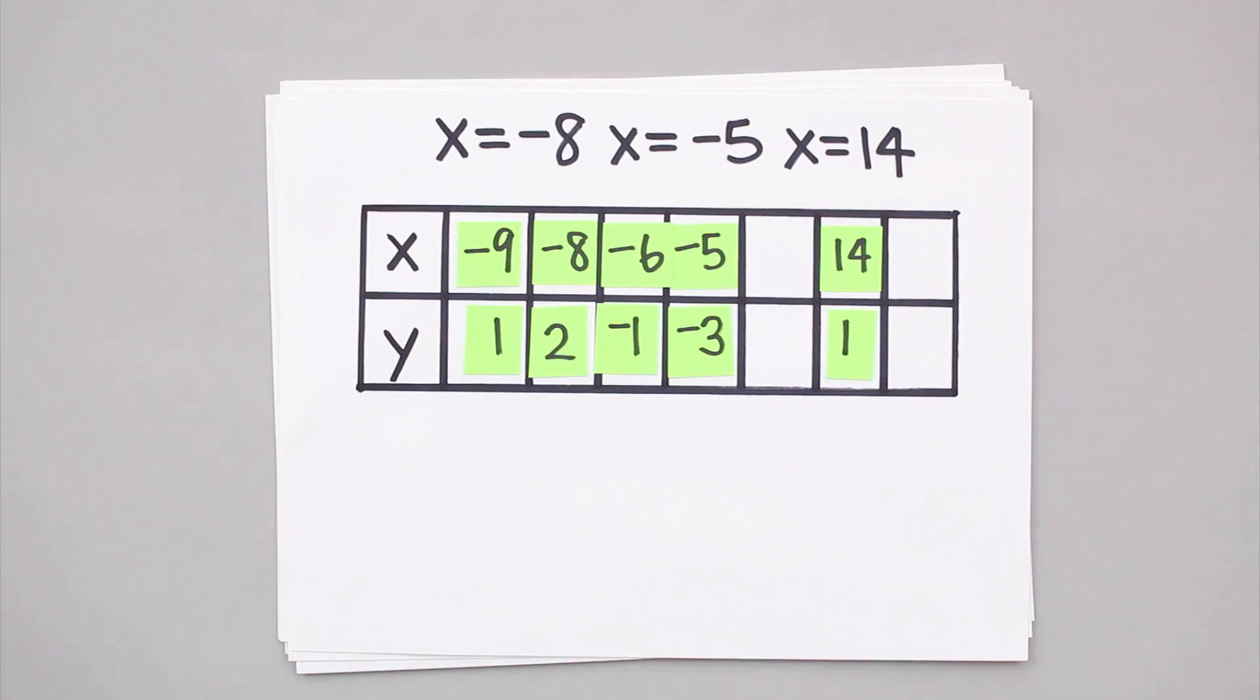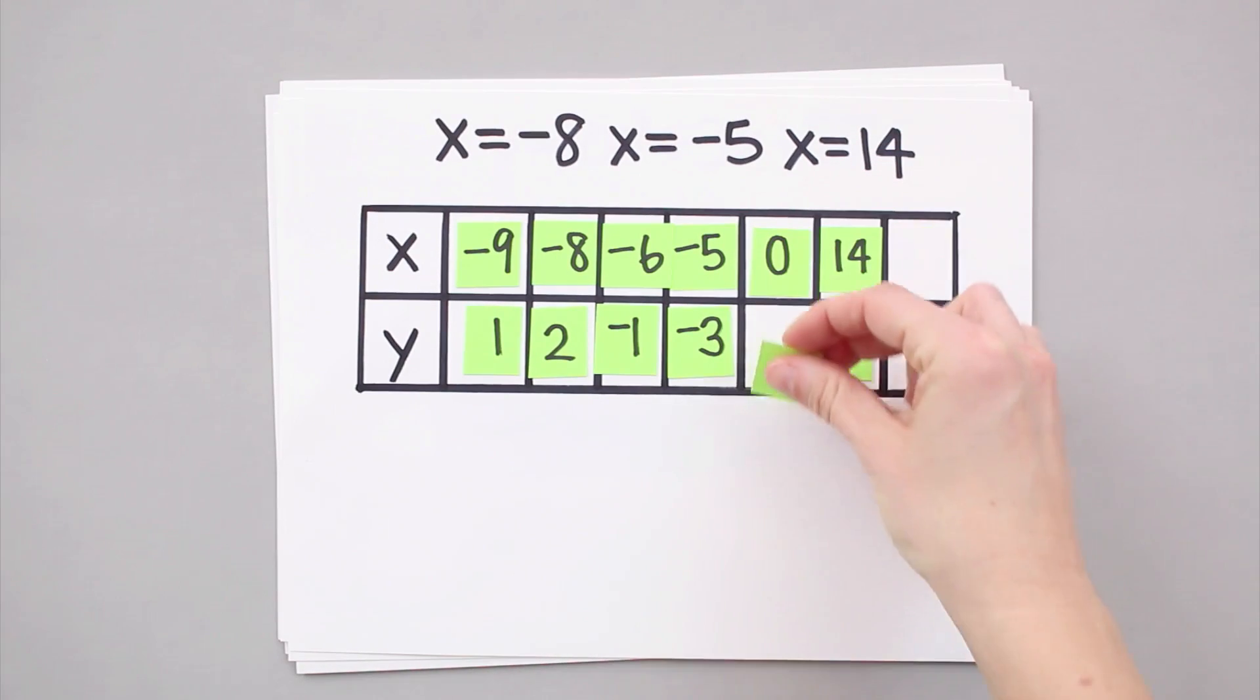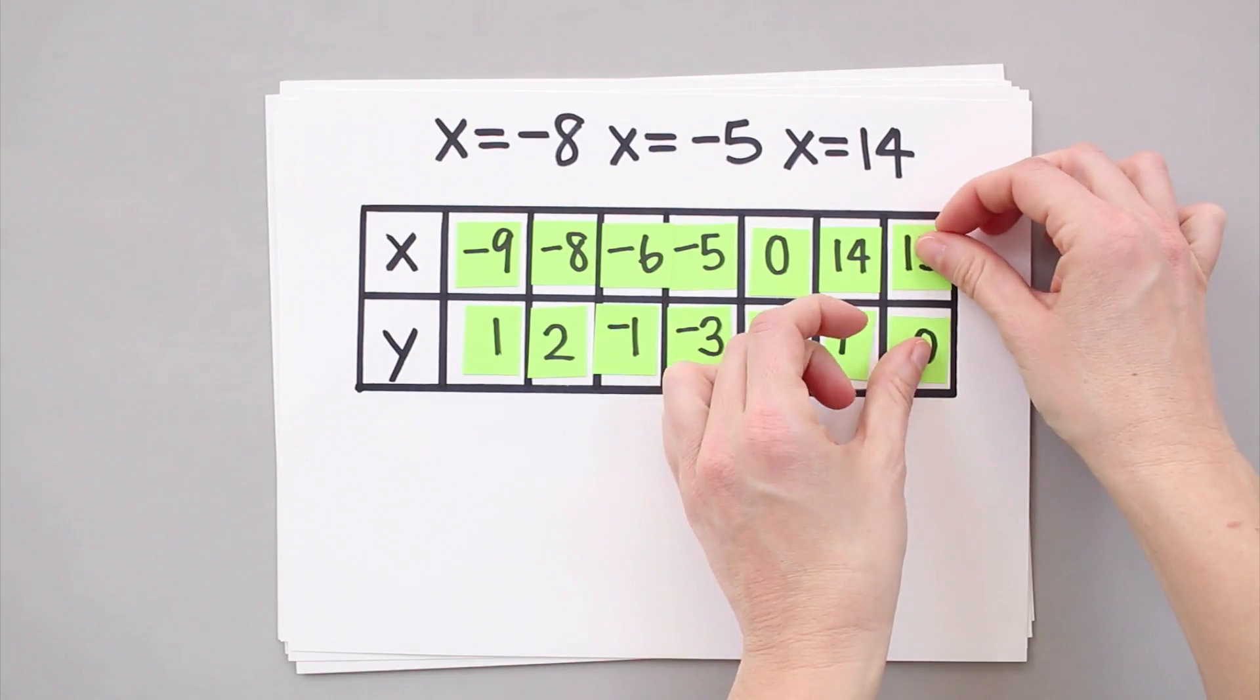In other words, we need to pick a value in between every critical point so that we can see what the function is doing as it travels from one critical point to the next.